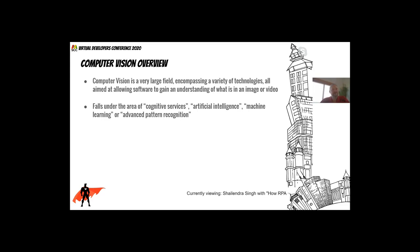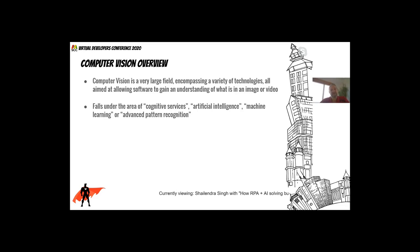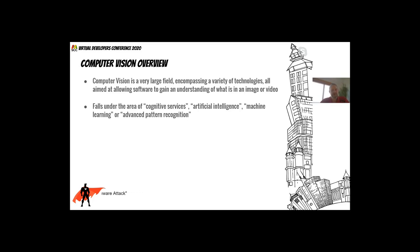So what is computer vision? It's a large field that encompasses many technologies, but at the bottom line it's about letting software make sense of what's visually available in an image or video. We'll mainly focus on images. This falls under the area of cognitive services — in the Microsoft world you'll hear it referred to as AI, machine learning, or cognitive services. It's really pattern recognition, finding patterns in visual information.